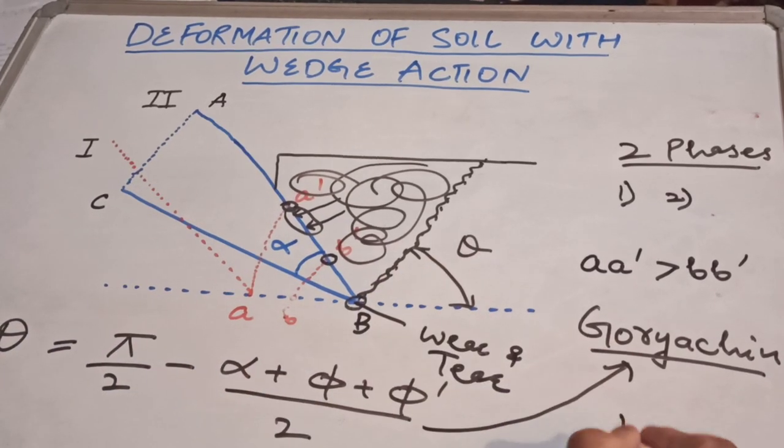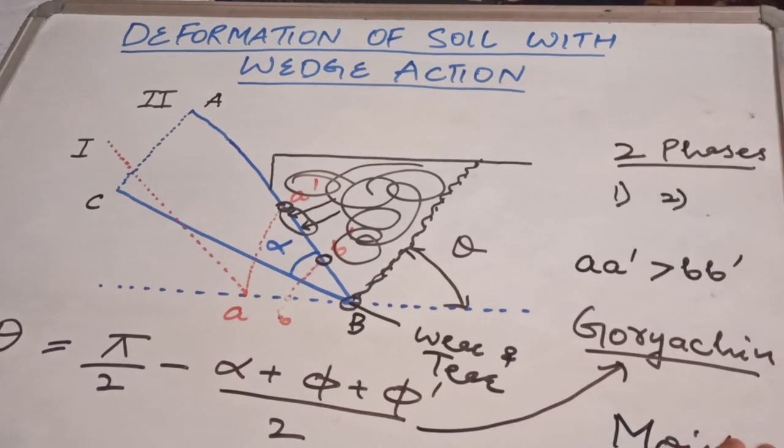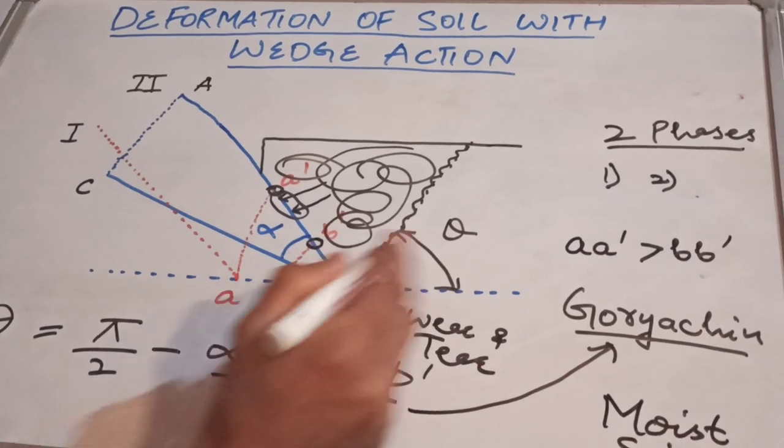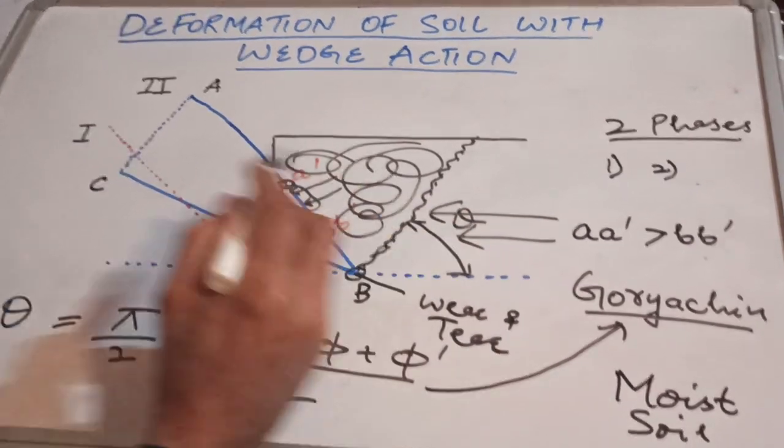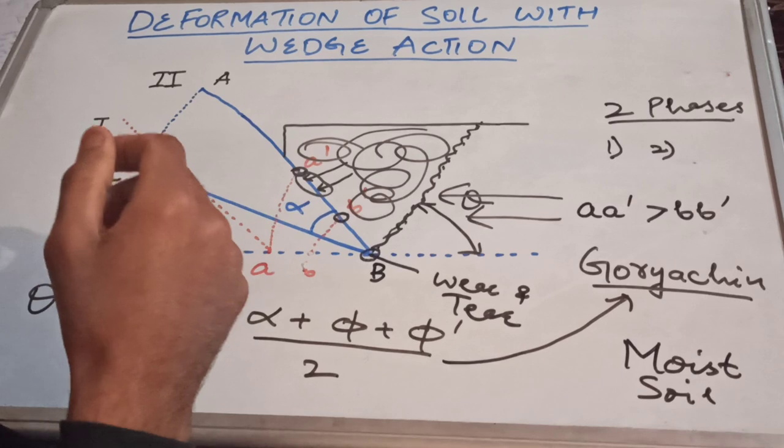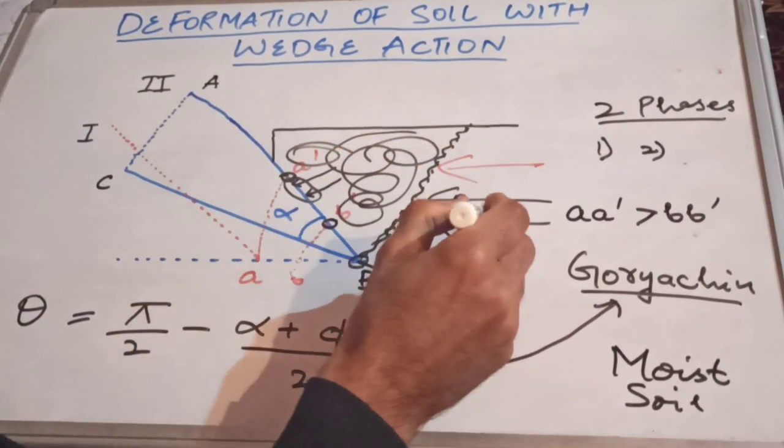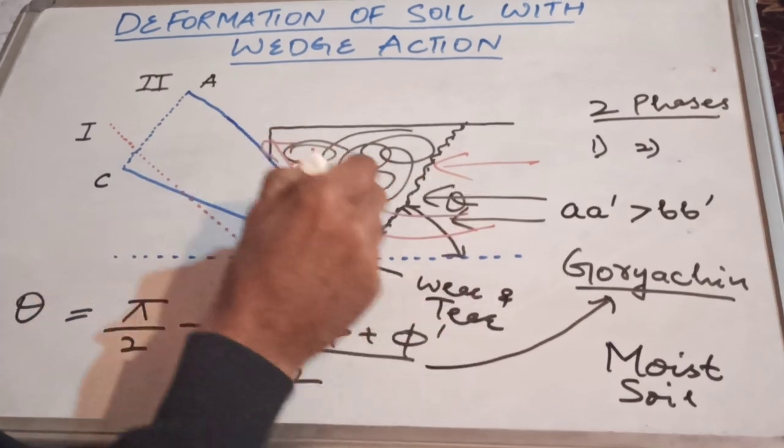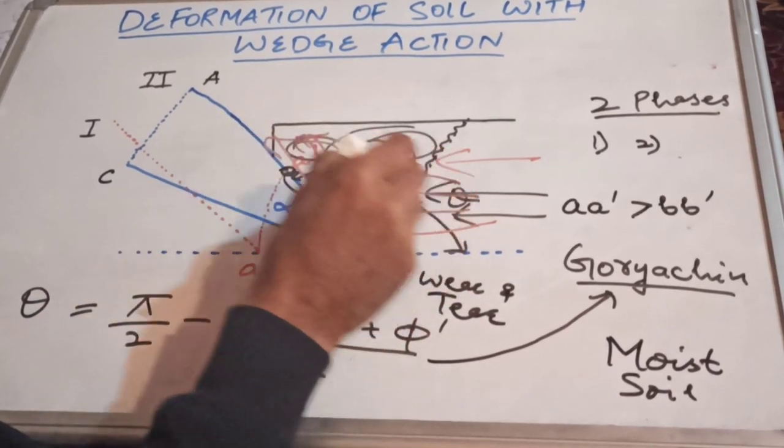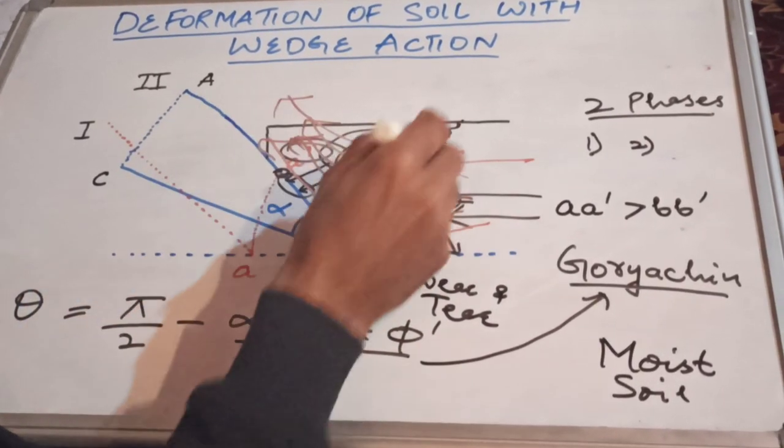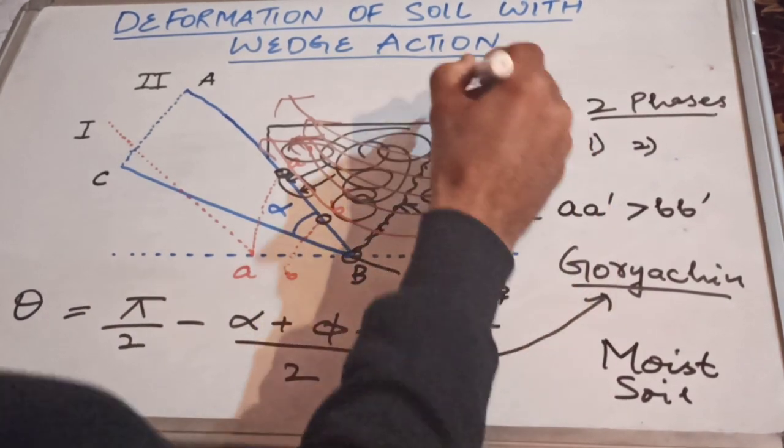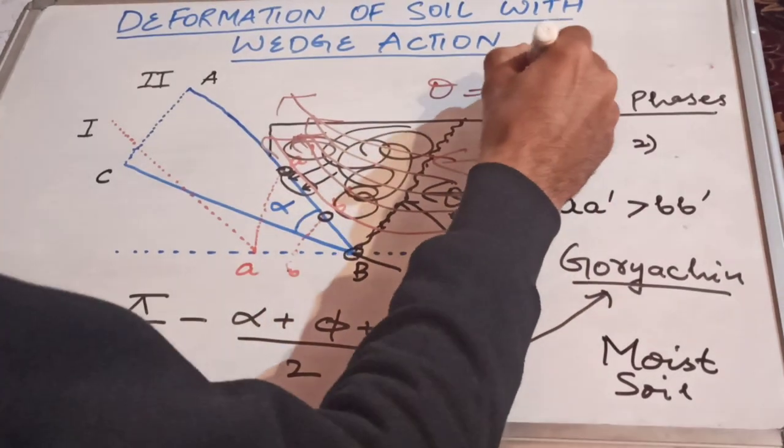Now imagine if you are tilling moist soil. What will happen? The moist soil that comes from the side will not form any blocks. It will directly come on top of the tillage tool and come out. No fissures will form. In that case, this angle theta is zero degrees.